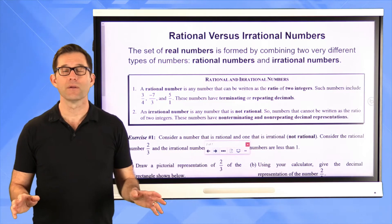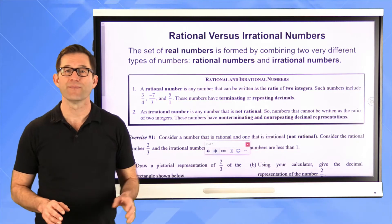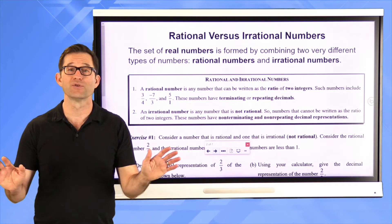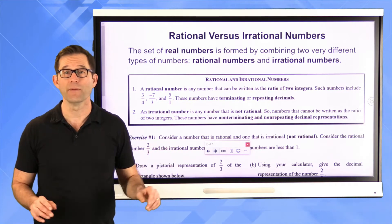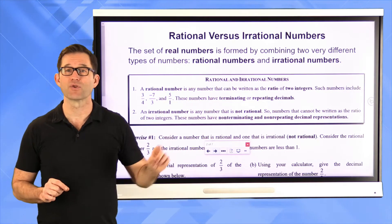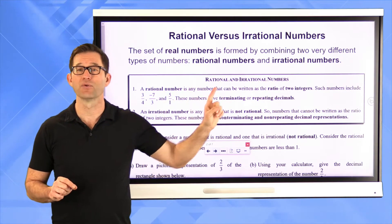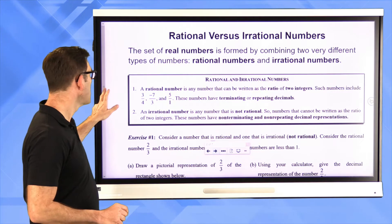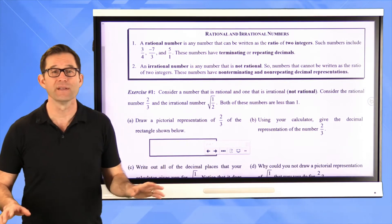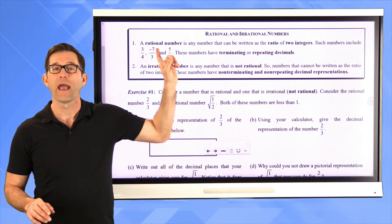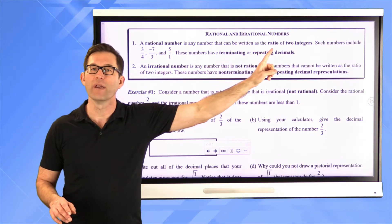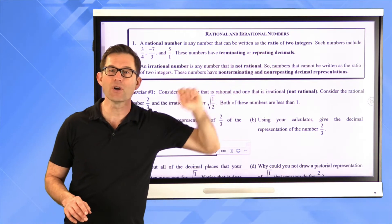Rational versus irrational numbers. The set of real numbers, which is basically all the numbers you know at this point, is formed by combining two very different types of numbers: rational numbers and irrational numbers. We looked at rational numbers a few days ago, but let's revisit it now. A rational number is any number that can be written as the ratio of two integers.